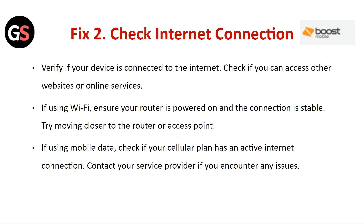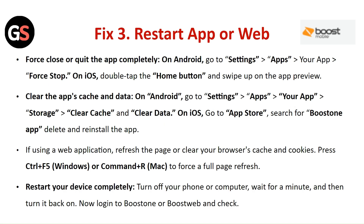Fix 2: Check Internet Connection. Verify if your device is connected to the internet and check if you can access other websites or online services. If using Wi-Fi, ensure your router is powered on and the connection is stable, and try moving closer to the router. If using mobile data, check if your cellular plan has an active internet connection. Contact your service provider if you encounter any issues.